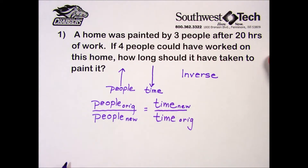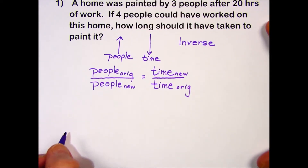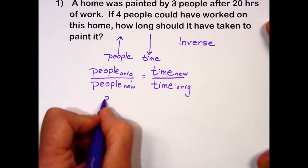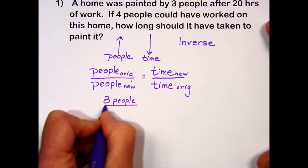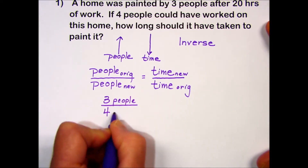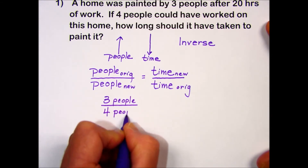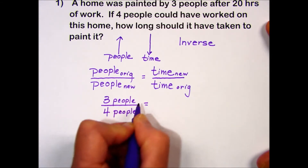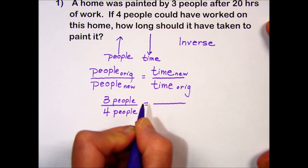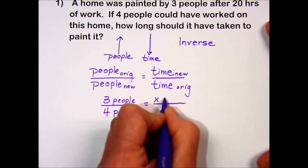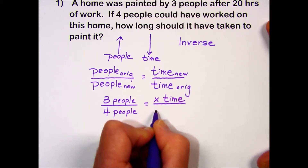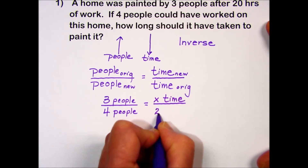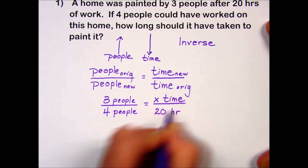Plugging in the information from the problem: originally we had three people. The question is, if we increase to four people working on this painting project, what will the result be? Well, that's our unknown. We expect it to be less time, and the original time to complete this project was 20 hours.